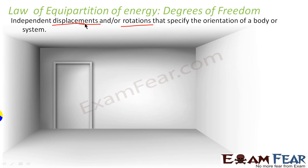Your degree of freedom is lesser because you are restricted more. So degree of freedom talks about the independent displacements or rotations that specify the orientation of a body — to what extent it can move, whether it can move, rotate, or vibrate, and what its limitations are. That is known as degree of freedom.